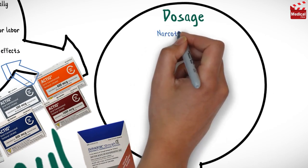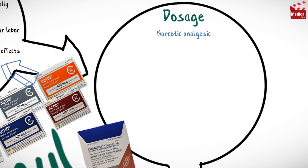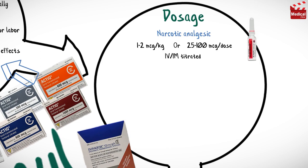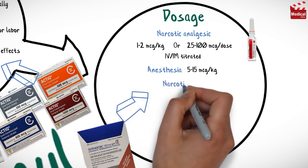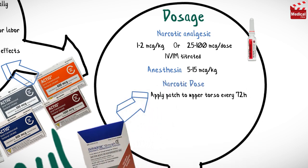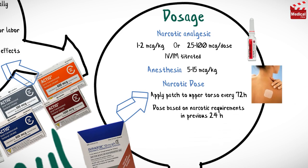The usual dose as a narcotic analgesic for adults is 1 to 2 micrograms per kilogram, or 25 to 100 micrograms per dose, intravenous or intramuscular, titrated to the needed dose. For anesthesia, the dose is 5 to 15 micrograms per kilogram. For the fentanyl transdermal patch, apply the patch to the upper torso every 72 hours, with the dose based on narcotic requirements in the previous 24 hours.